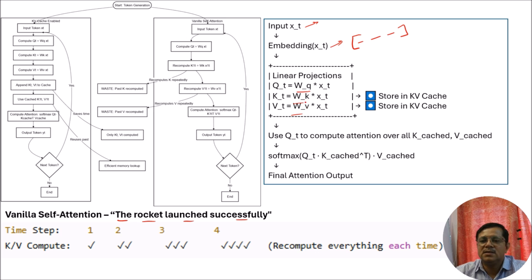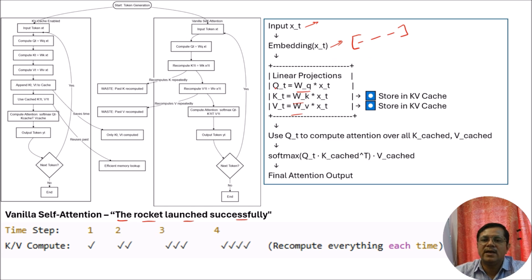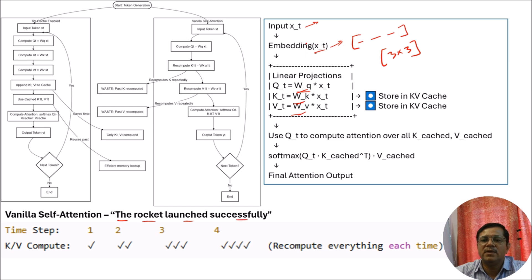All things about how linear projection matrices are calculated and why they are used, I have already discussed multiple times in previous tutorials. Now we are just considering that at the linear projection phase we will have 3x3 size matrices for query, key, and value, and we take the product of it with our input token.